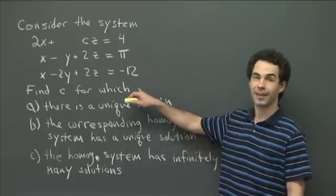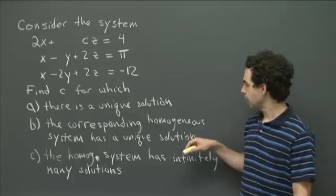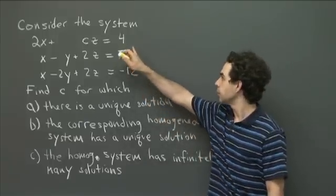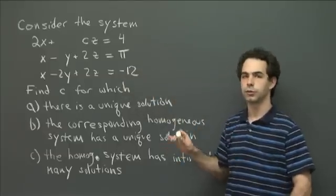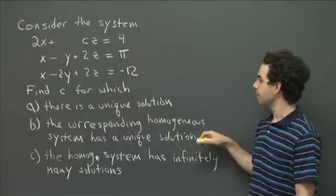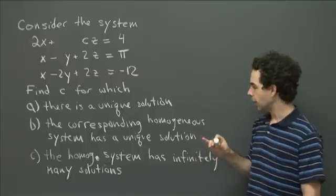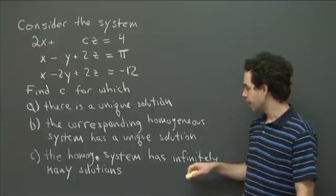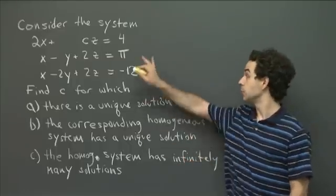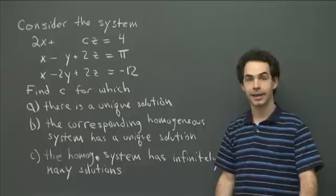Find a value of c, or all values of c, for which: first, there's a unique solution to this system; second, the corresponding homogeneous system has a unique solution. The homogeneous system is where you replace the constants on the right with 0 — the left-hand sides are all the same, but the right-hand sides become 0. Also find values of c for which the homogeneous system has infinitely many solutions. Note I'm not asking you to solve the system, although whether you can might depend on the value of c.